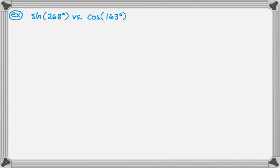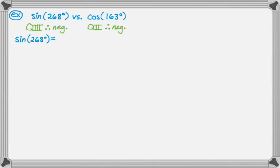Example three: compare sine of 268 degrees to cosine of 163 degrees. 268 is in quadrant three where sine is negative, and 163 is in quadrant two where cosine is negative. For sine of 268, it's the negative of sine of 268 minus 180, giving negative sine of 88. For cosine of 163, it's the negative of cosine of 180 minus 163, giving negative cosine of 17.